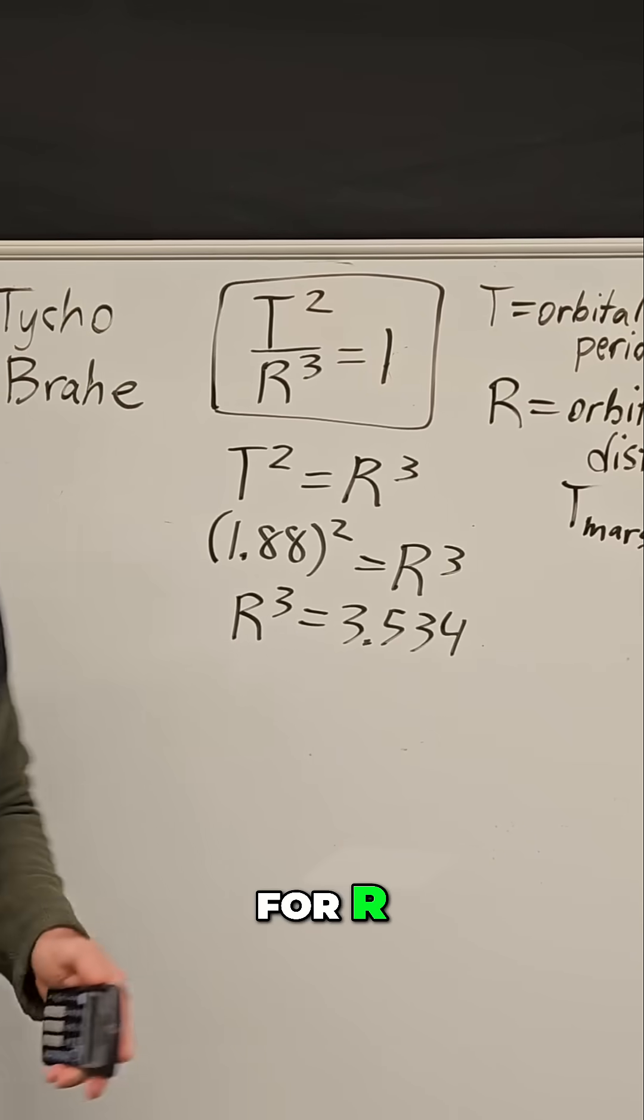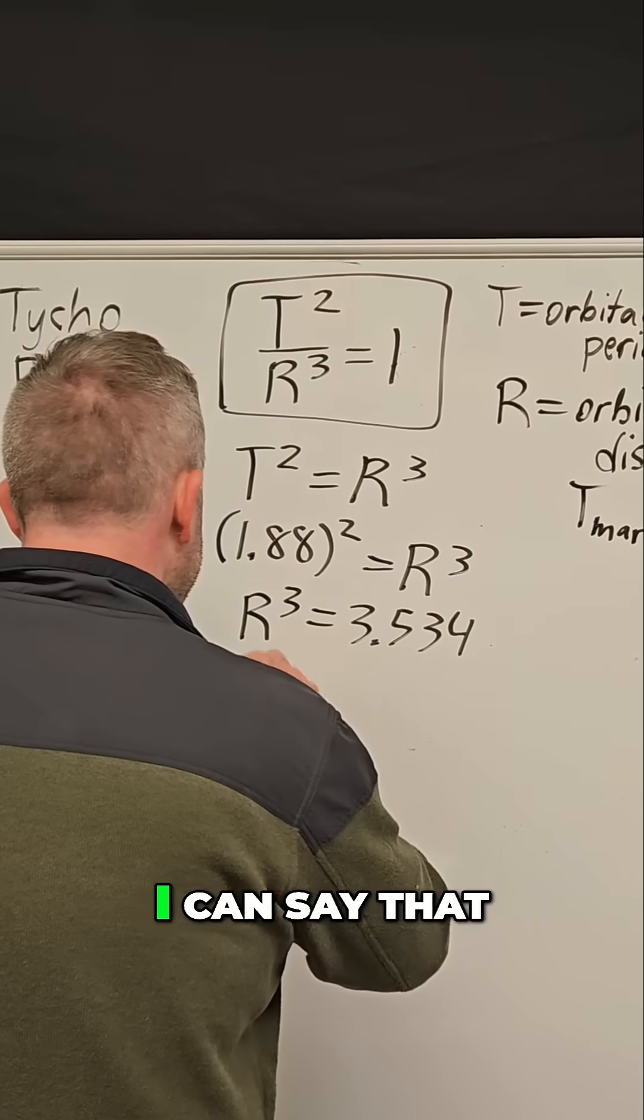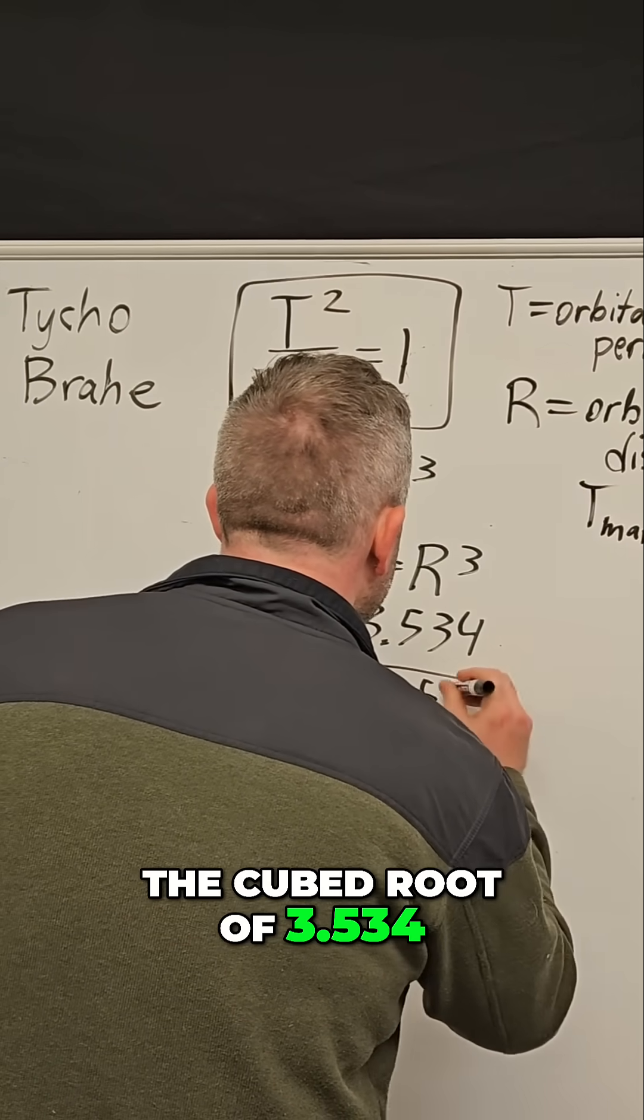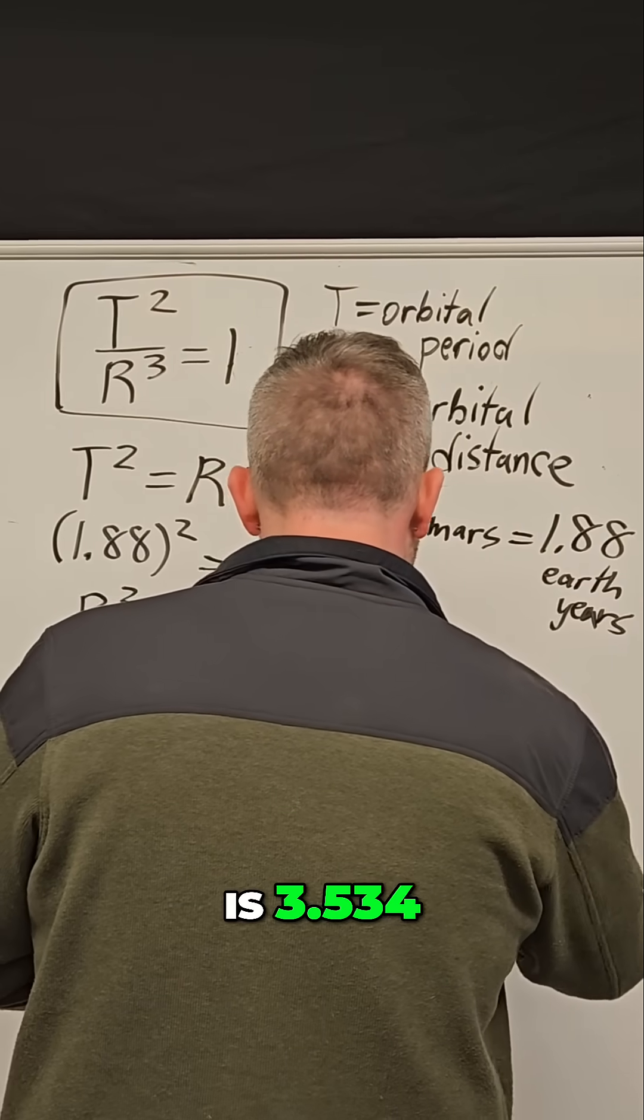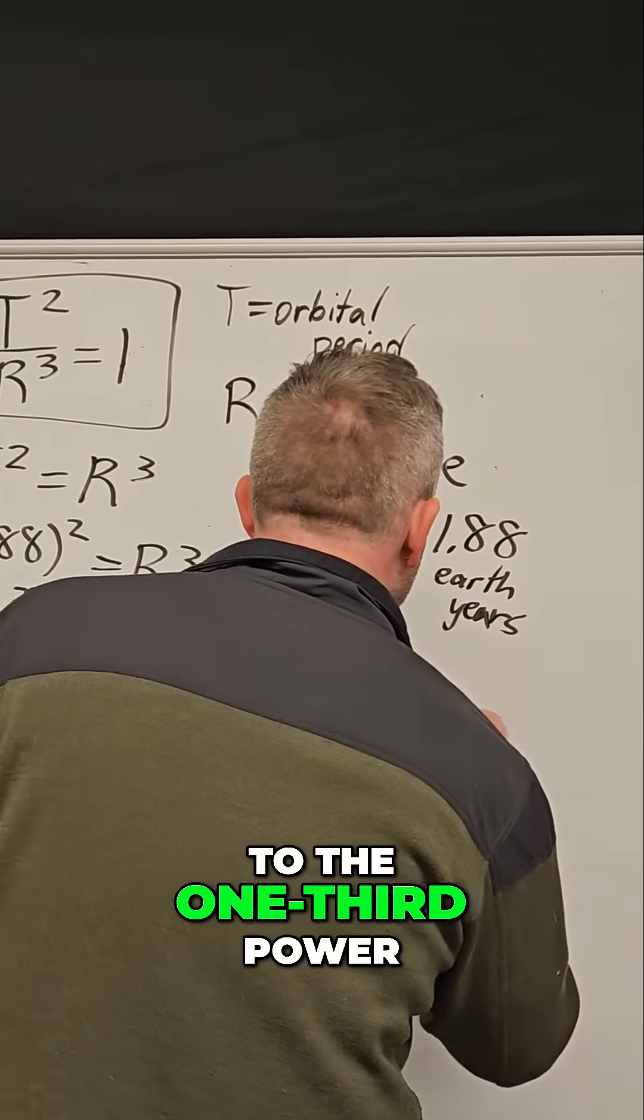And so to solve for R, which remember is the average distance from the sun to Mars, I can do this. I can say that R is equal to the cubed root of 3.534. There's another way of writing that. We could say this is 3.534 to the one-third power.